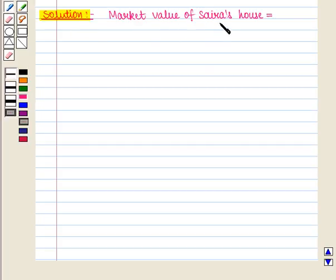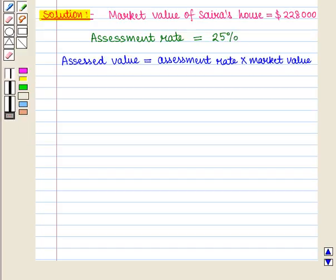The market value of Saira's house is given as $228,000. Assessment rate is given as 25%. First of all we shall find the assessed value which is given by assessment rate into market value.